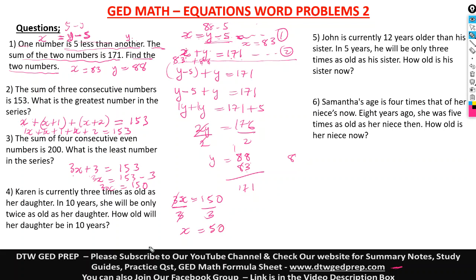The question asks: what is the greatest number in the series? X, the first number, is 50. The second number is 50 plus one, which is 51. The third number is 50 plus two, which is 52. The greatest is 52 — so your answer is 52. And when you add 50 plus 51 plus 52, it gives you 153, which confirms these are the right numbers.